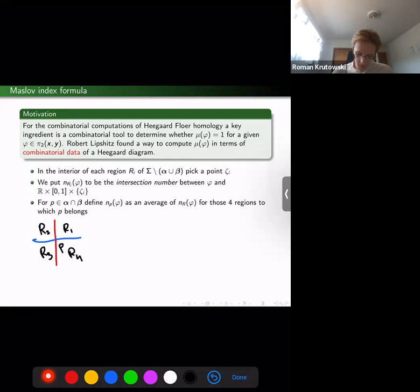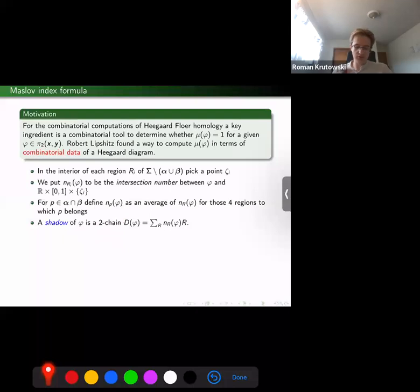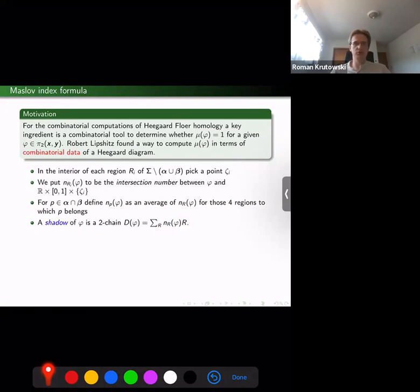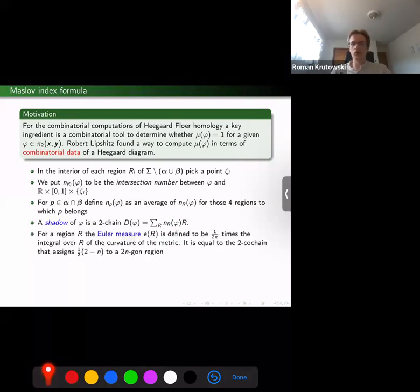Given a point of intersection of alpha and beta curves, we can define the coefficient of φ at this point by averaging the coefficients of the regions to which this point belongs. So assume we have this point p and there are regions R1, R2, R3, and R4. Then nₚ(φ) is just the average of the coefficients at each of these regions.